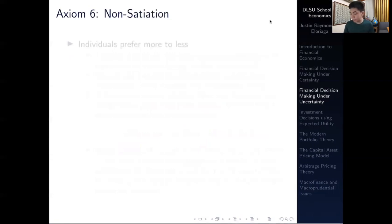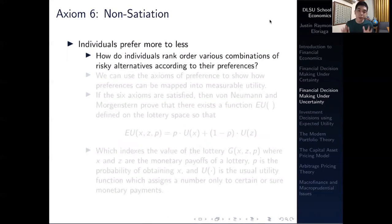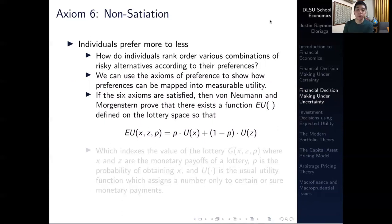The last axiom is non-satiation: individuals will prefer more to less, more consumption to less consumption. Using these axioms of preferences, we can show how preferences can be mapped into measurable utility. If all six axioms are satisfied, the von Neumann–Morgenstern expected utility function can be realized and formulated.